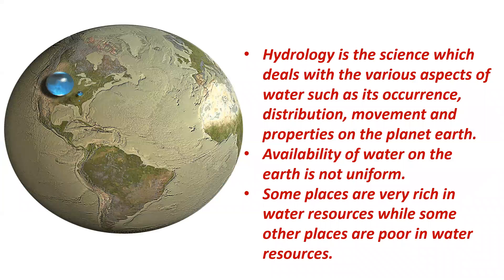Hydrology is a science which deals with various aspects of water such as its occurrence, distribution, movement, and properties on the planet Earth. Availability of water on the Earth is not uniform — water is unevenly distributed, with some places very rich in water resources while others are poor.